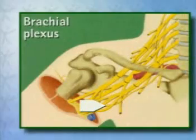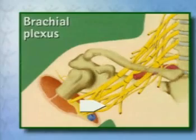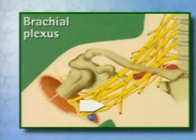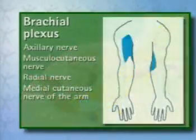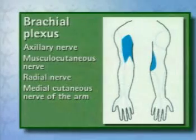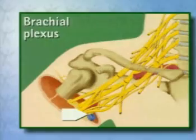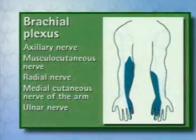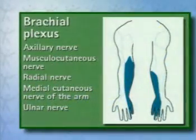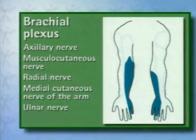The cutaneous brachial medial nerve is a purely sensory nerve that supplies the skin on the medial side of the upper arm. The ulnar nerve supplies sensory nerves to the ulnar side of the hand and fingers, and also innervates some of the flexors of the lower arm and hand with motor fibers.